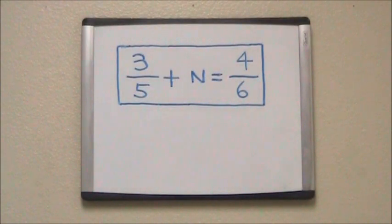Our problem is 3 fifths plus N equals 4 sixths. We need to find the missing fraction N in order to make this equation complete.